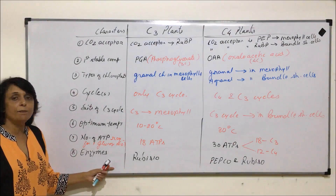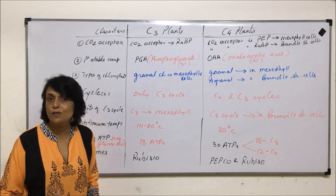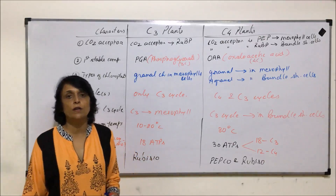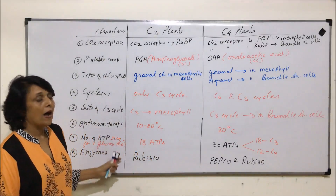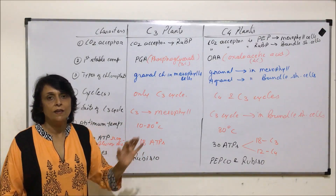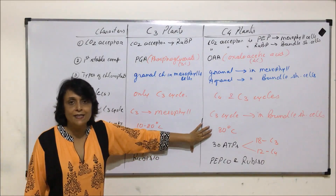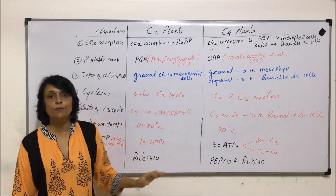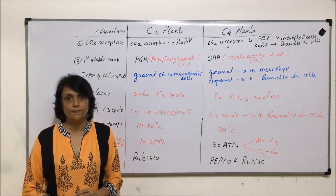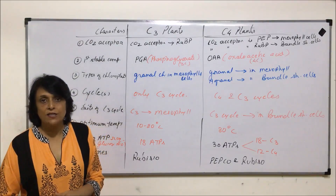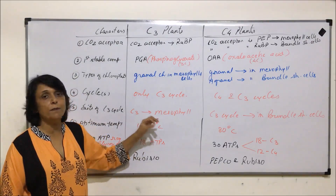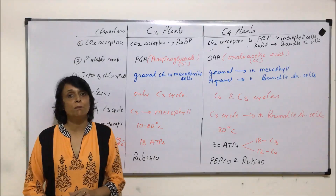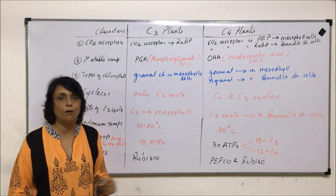Examples of C3 plants include most common plants we see around us, while C4 plants include maize, sugarcane, sorghum, and Euphorbia. After understanding these two cycles, we can see that the adaptations in C4 plants help them solve the problem of photorespiration. Similarly, there are other plants — called CAM plants — that use a different mechanism to solve the same problem, and we will discuss those next.